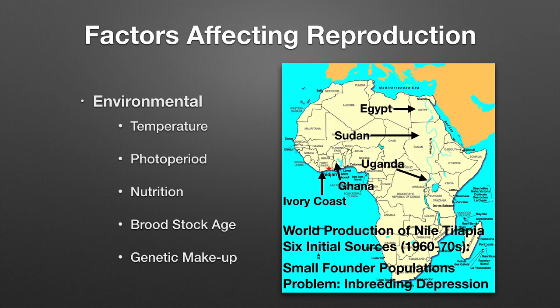Another main consideration in tilapia reproduction is genetic makeup. When tilapia were first exported from Africa for global production, there were six initial source sites: Egypt, Sudan, Uganda, Ghana, and the Ivory Coast. This represents a small founder population, and breeding fish that are too genetically similar leads to inbreeding depression — deformities, reduced survival, or poor growth. So the genetic makeup of your broodstock is very important.